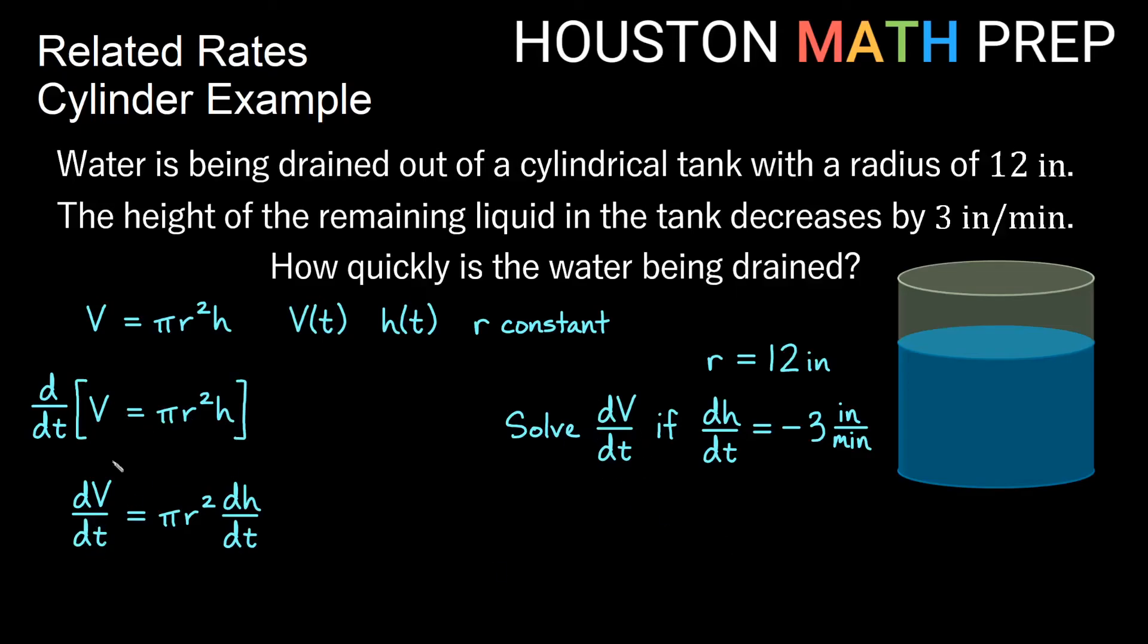I want to solve dV/dt so I can leave this in the equation. So I look, do I have all of the other things that I need? Do I have r? Yes, I have r because r is a constant. So I have 12 inches can go in for r and we'll square that. dh/dt, we know exactly what we want to use for dh/dt because we have it over here. We want to solve dV/dt when dh/dt is negative 3 inches per minute. So we have both of those things and we should just be able to plug in and get dV/dt in this example.